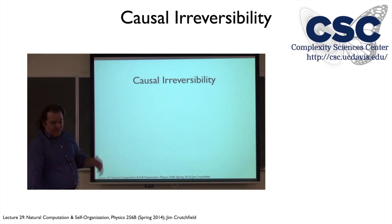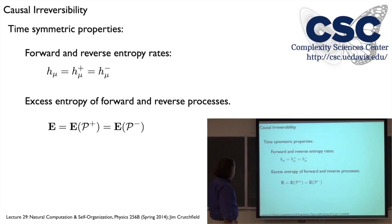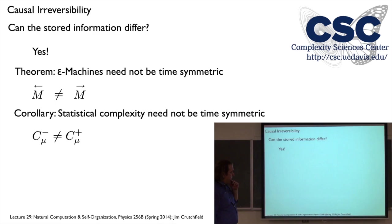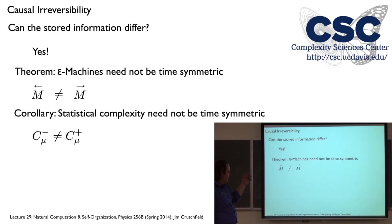One consequence: there can be statistically irreversible processes — namely those with different statistical complexities. Entropy rates are the same in both scan directions. Past-future mutual information or excess entropy is by definition time-symmetric. But the stored information — statistical complexity — can be different. So now how do we analyze this? The epsilon machines needn't be time-symmetric. The forward and reverse machines needn't be the same, and if they're not, the statistical complexity need not be time-symmetric.